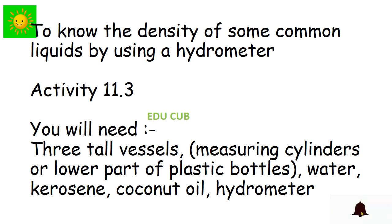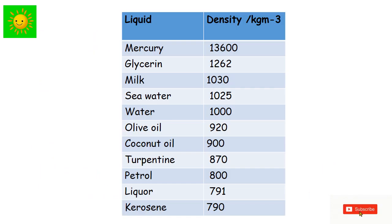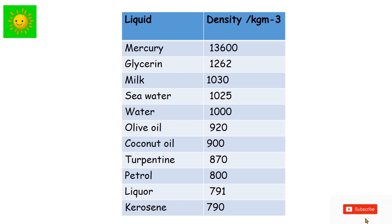To find the densities of some common liquids using a hydrometer, we need three tall vessels (measuring cylinders or lower parts of plastic bottles), water, kerosene, coconut oil, and hydrometers. Put water, kerosene, and coconut oil into the three vessels. Leave the hydrometer in each liquid and take the reading of density. Compare your values in the table of liquids and their densities, which includes mercury, glycerine, milk, sea water, and others.